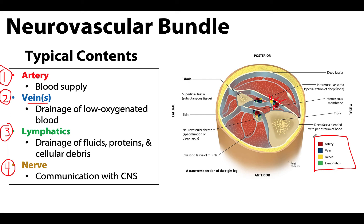So these are the four main things that you'll have in a neurovascular bundle, and the colors that you'll see them depicted in illustrations.